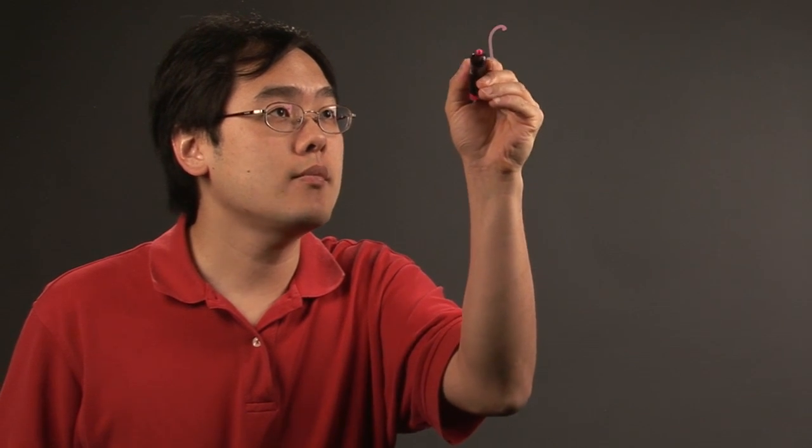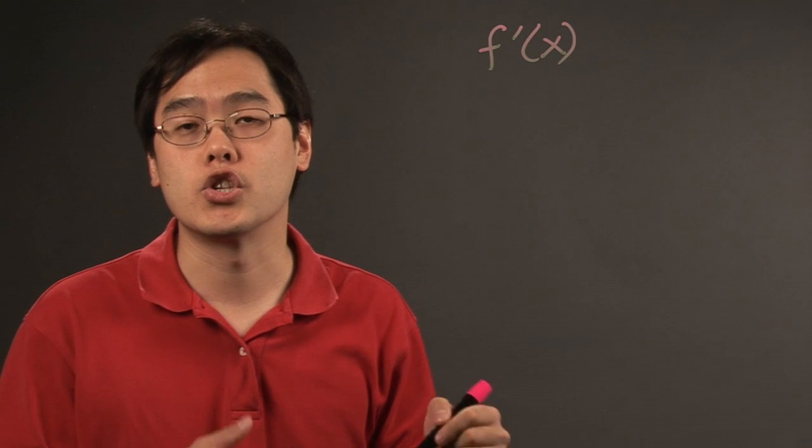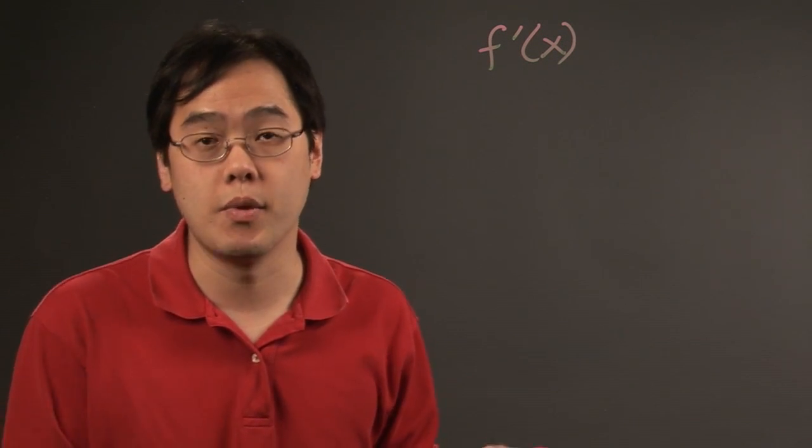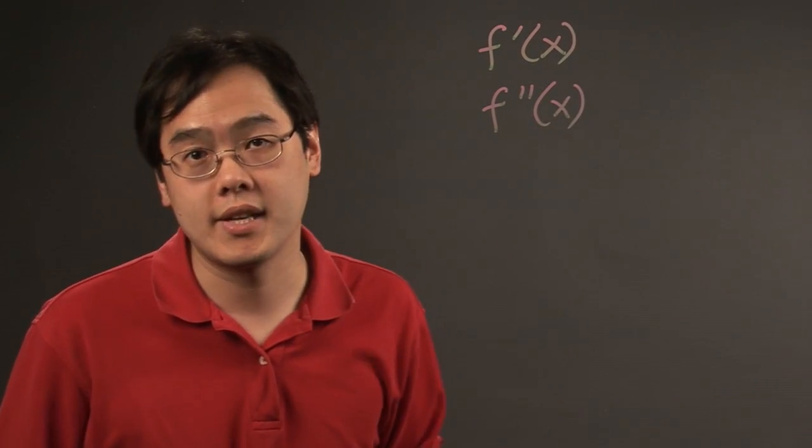So the derivative is f prime of x. The slope of the derivative means the slope of the slope, which is the derivative of the derivative, which is f double prime of x.